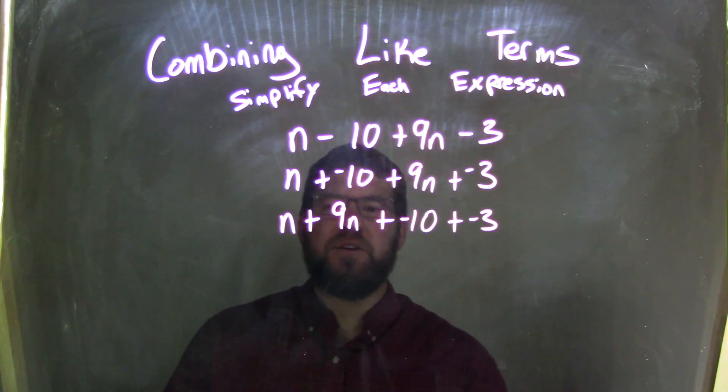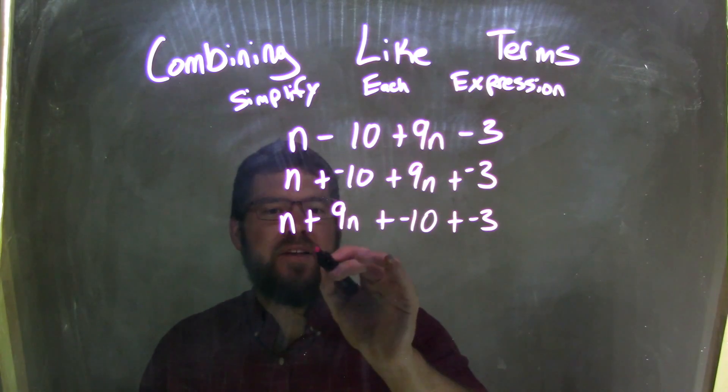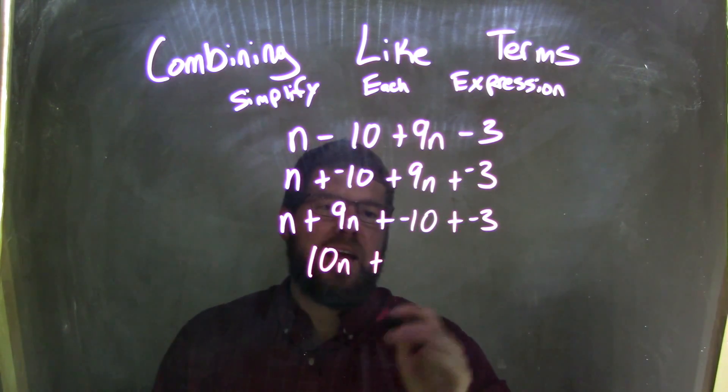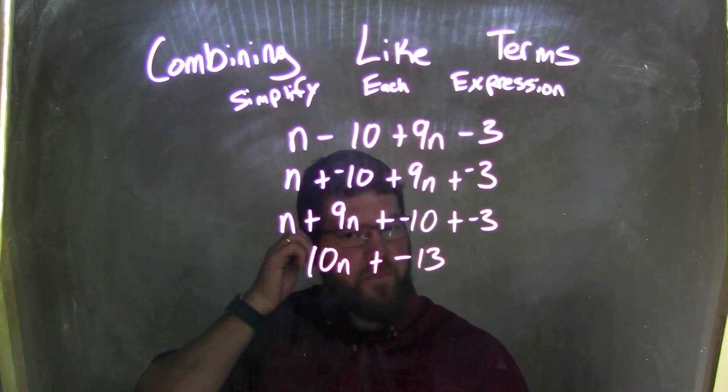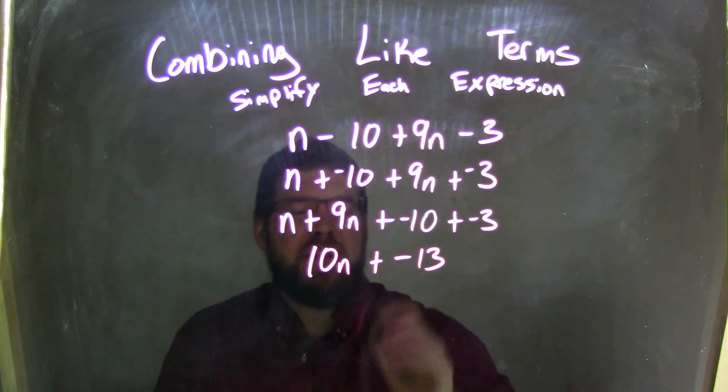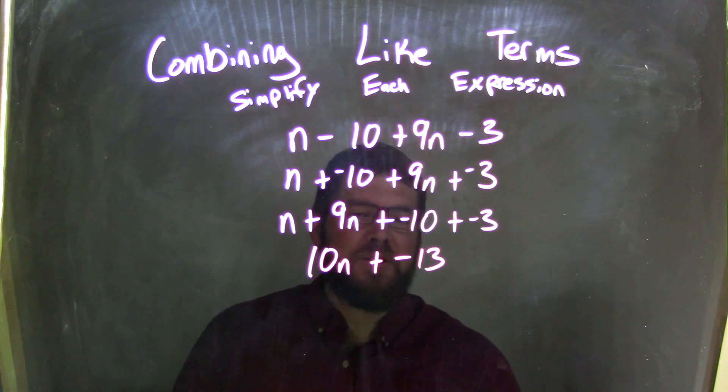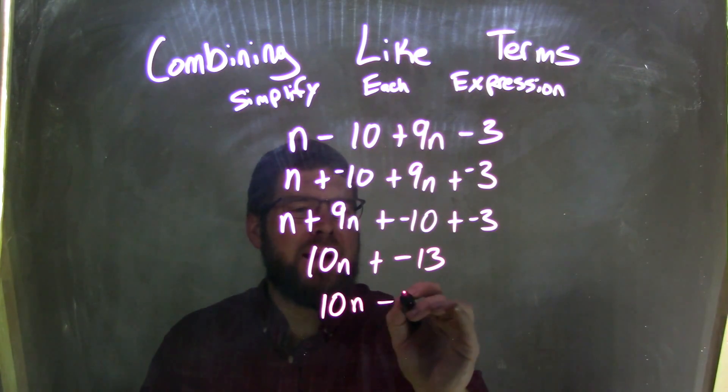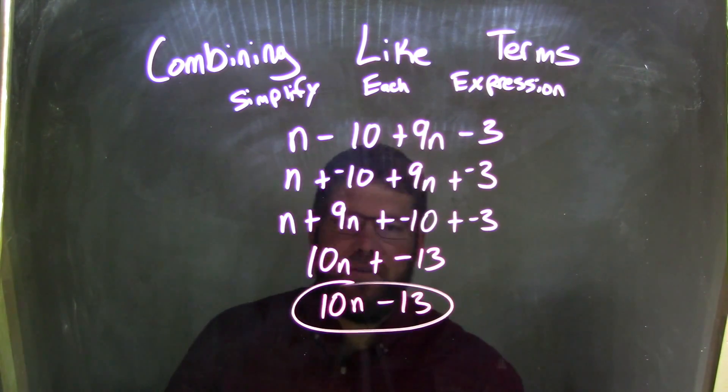So now we combine our like terms. n plus 9n is 10n, and then negative 10 plus a negative 3 is negative 13. Plus a negative can be rearranged to be, or rewritten as subtraction. And that looks nicer. So we're going to rewrite this to be 10n minus 13. And that is our final answer.